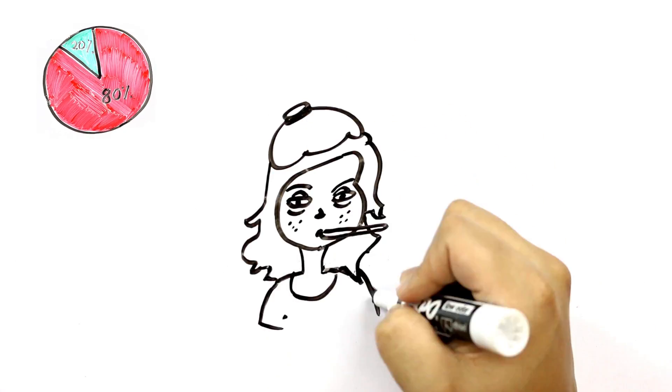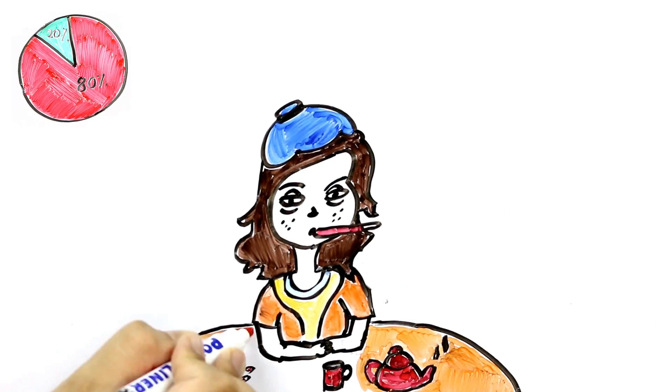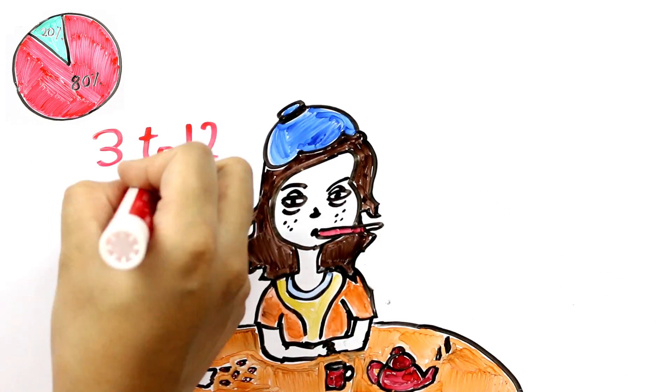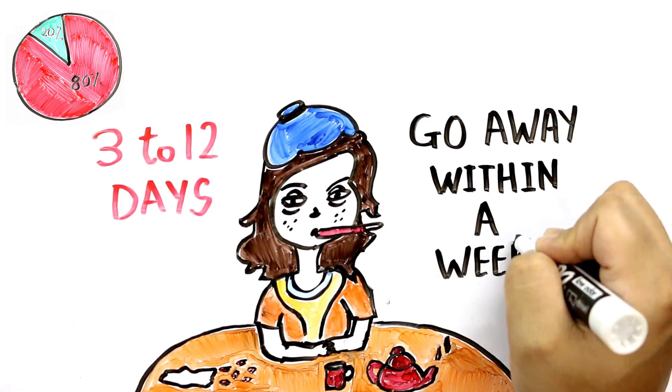And for everyone else, the symptoms are usually mild with rashes on the body, headaches, pain in the joints and bones and fever. These symptoms typically show up between 3 and 12 days after the initial mosquito bite and then go away within a week.